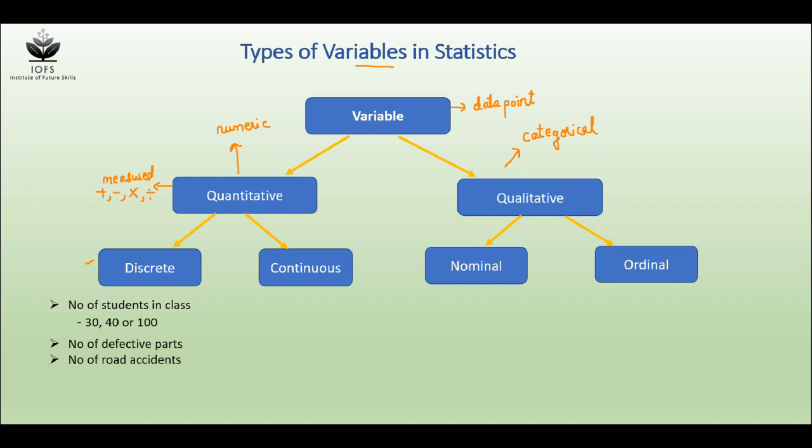Whereas, when we talk about continuous data, they can take any value within a range. By saying any, I mean they can take uncountable number of values within a range.